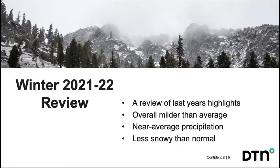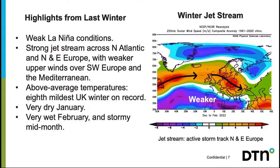In short, the winter of 2021-22 was milder and less snowy than average. We were under the global influence of a weak La Niña — a cool phase of equatorial Pacific sea surface temperatures. There was a strong jet stream typically positioned further north than average through the winter, exiting eastern Canada, crossing the Atlantic to the UK, then driving southeast into eastern Europe. This created weaker winds to the south, especially across southwest Europe, providing a barrier to cold polar outbreaks that was rather difficult to breach.